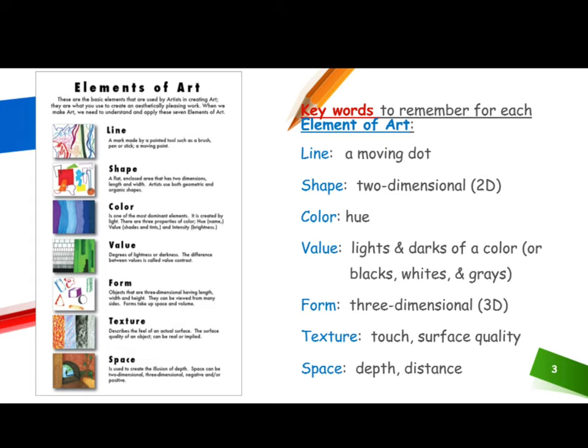The difference between values is called value contrast. Form: objects that are three-dimensional, having length, width, and height. They can be viewed from many sides. Forms take up space and volume.